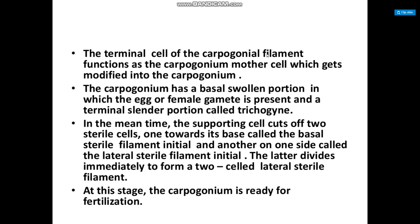This figure shows the development of the carpogonium. The terminal cell of the carpogonial filament functions as the carpogonium mother cell and gets modified into the carpogonium. The carpogonium has a basal swollen portion containing the egg (female gamete) and a terminal cylindrical portion called the trichogyne. The supporting cell also cuts off two sterile filament initials — a basal sterile filament initial and a lateral sterile filament initial, the latter dividing to form a two-cell lateral filament.